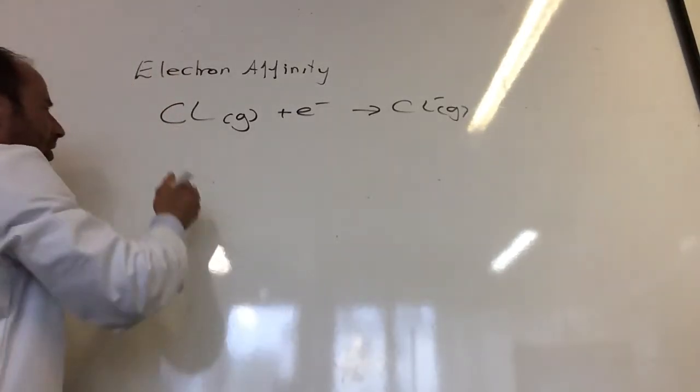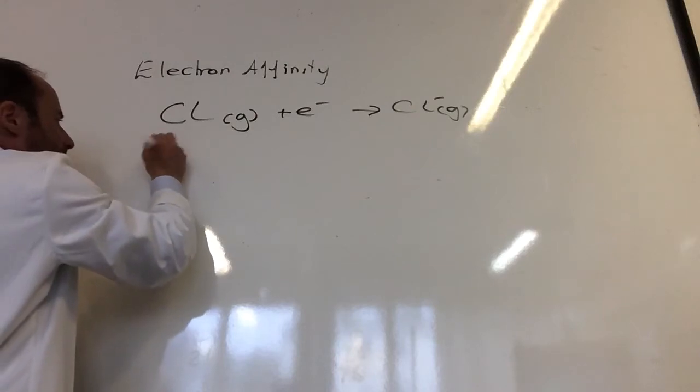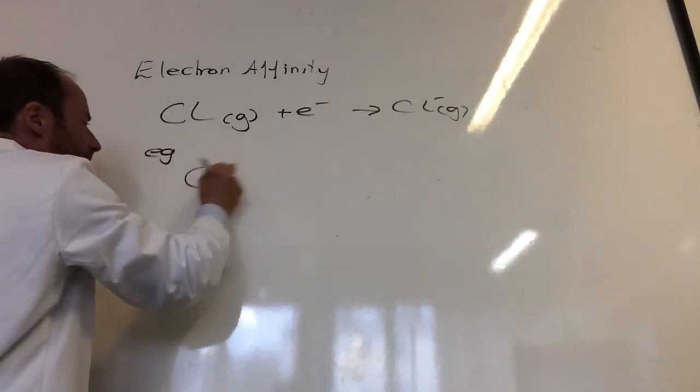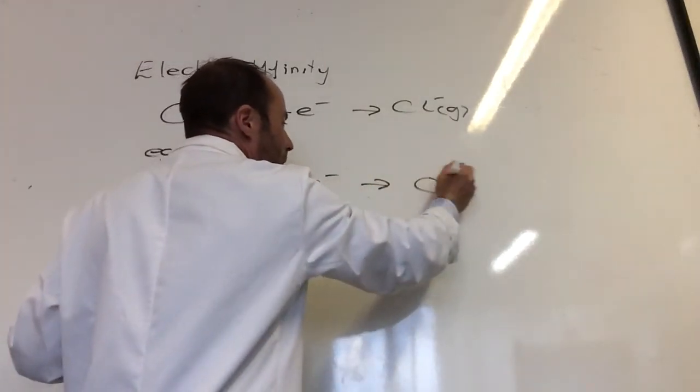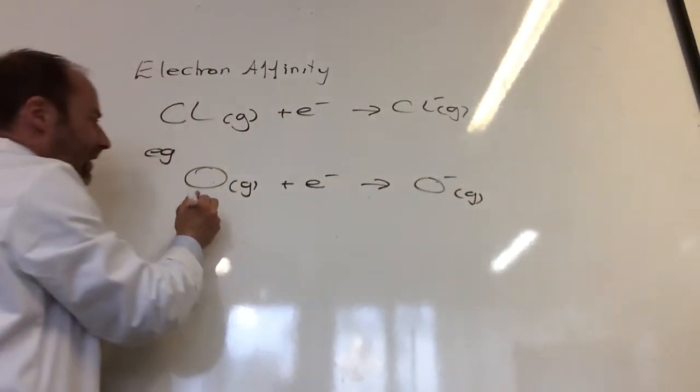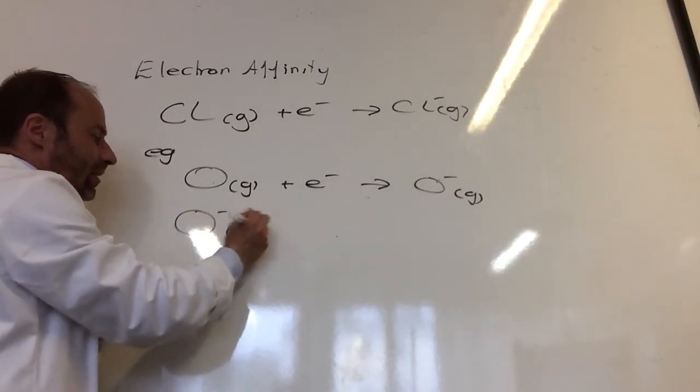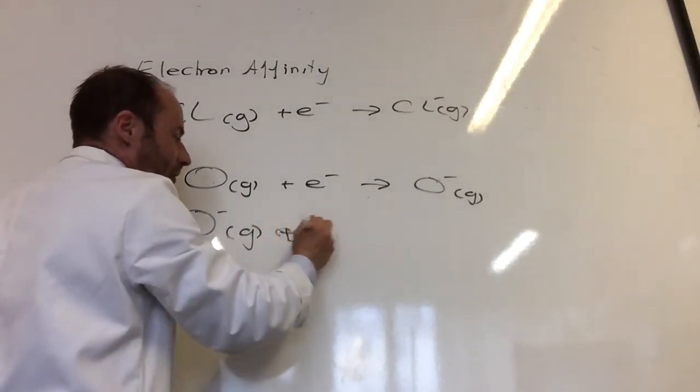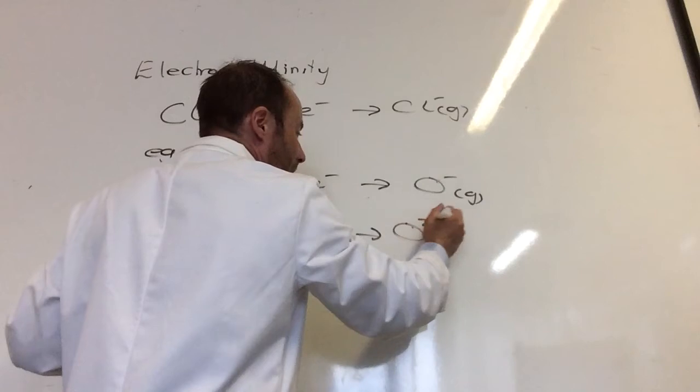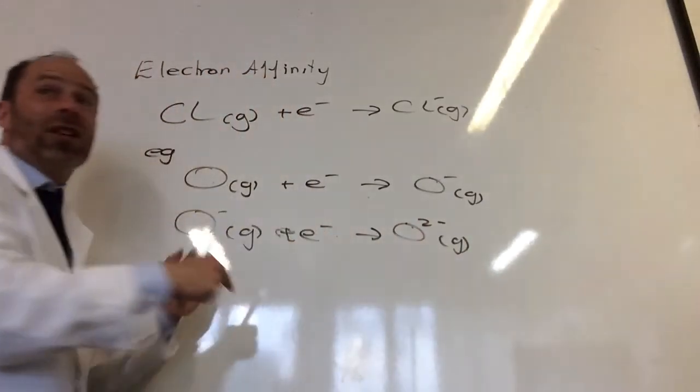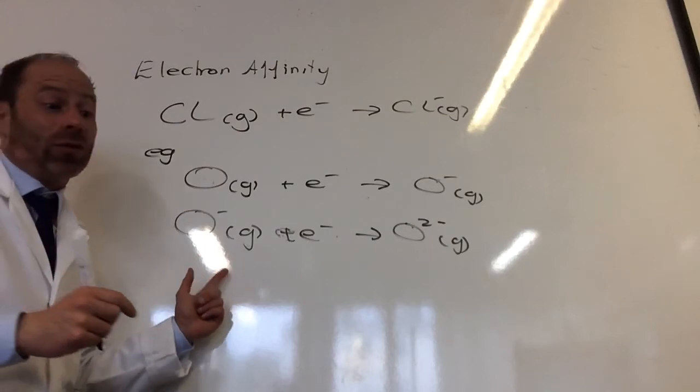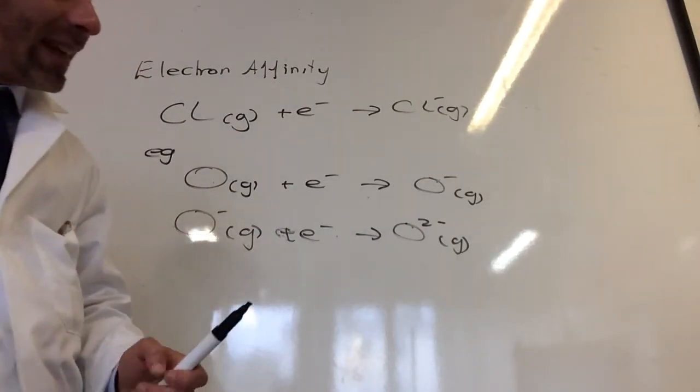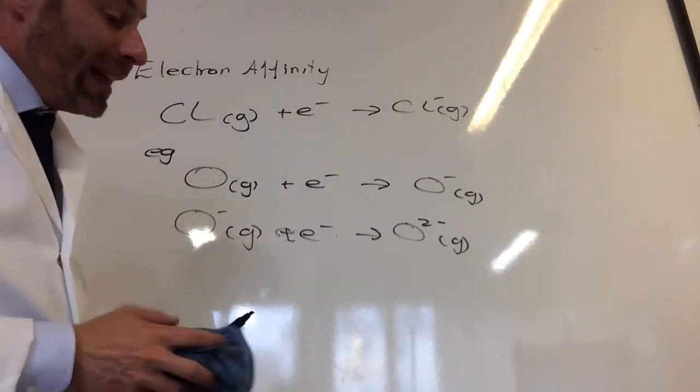The second would be adding another electron. So if we had to do it for oxygen, the first one would be O gas plus an electron to become O minus gas. And the second one would be O minus gas plus an electron to become O2 minus gas. So you need to have both of them for oxygen, because obviously oxygen has two electrons formed. So that is electron affinity.